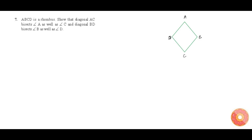From that, you can show anything — like, it bisects angle C, or diagonal BD bisects angle B and angle D. You can show anything.